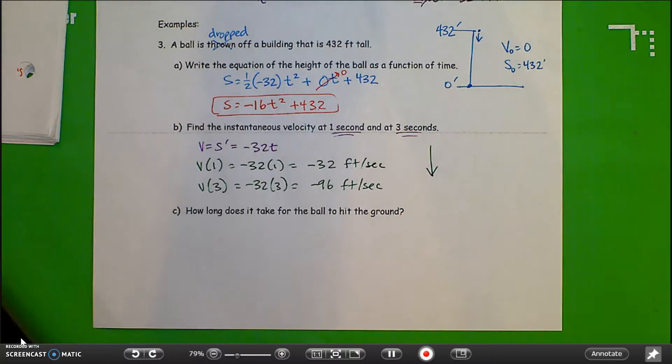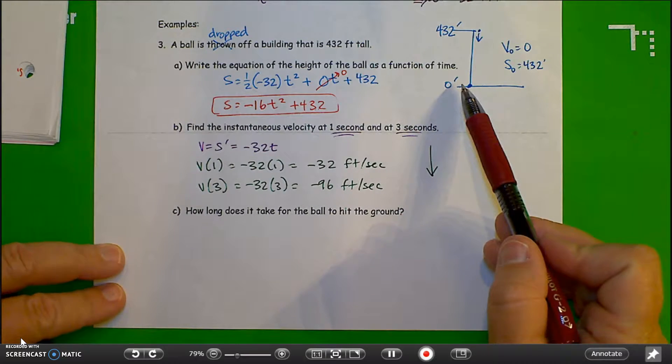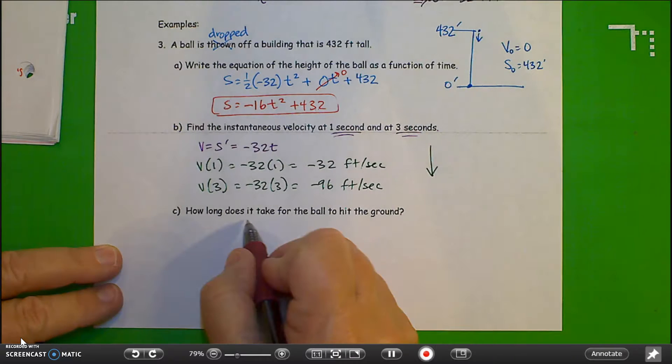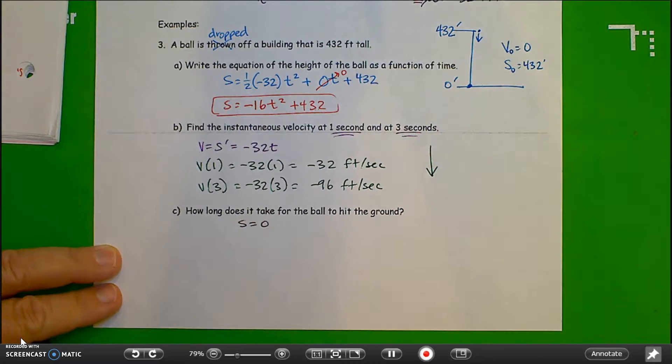How long does it take for the ball to hit the ground? You have to think about what conditions exist at ground level. Well, that is the position, or the height, equals zero.